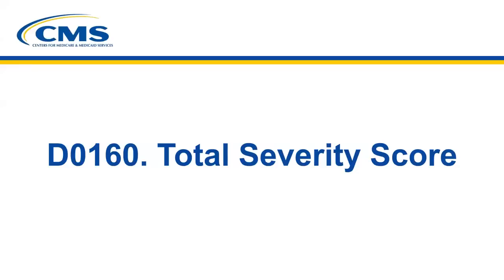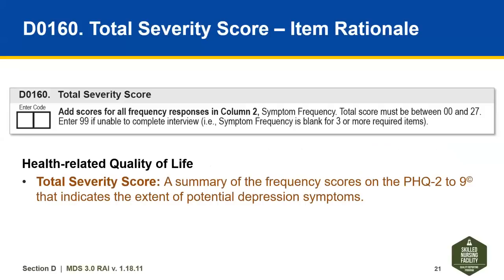Now let's look at the revisions made to the guidance for D0160 Total Severity Score. The item rationale for Total Severity Score was revised for health-related quality of life to explain what the Total Severity Score is. It now reads: Total Severity Score — a summary of the frequency scores on the PHQ 2 to 9 that indicate the extent of potential depression symptoms.